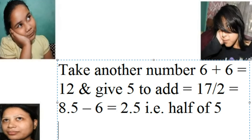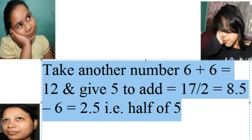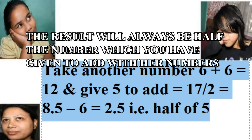Take another number: 6 plus 6 equals 12, and give 5 to add, equals 17. Halved equals 8.5, minus 6 equals 2.5. That is half of 5 — the number given to add. The result is always half of the number you give the person to add.